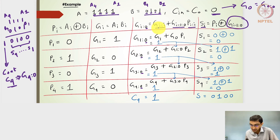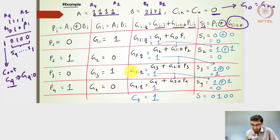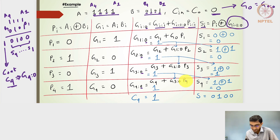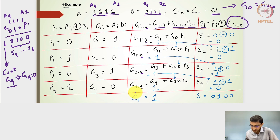G(2:0) = G2 + P2 · G(1:0) = 0 + 1·1 = 1. G(3:0) = G3 + P3 · G(2:0) = 1 + 0·1 = 1. G(4:0) = G4 + P4 · G(3:0) = 0 + 1·1 = 1. So all group generate signals G(1:0) through G(4:0) equal 1, and G(4:0) = 1 confirms that the carry out of the 4-bit addition is indeed 1.